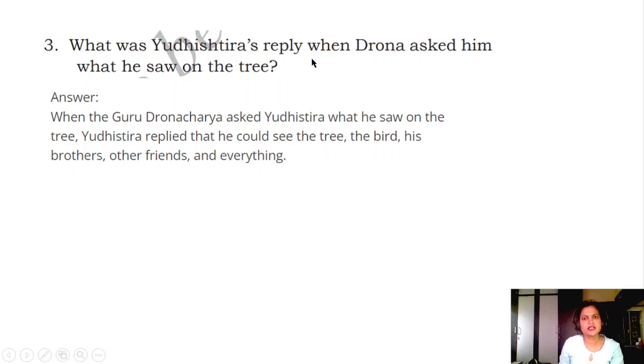Question 3: What was Yudhishthira's reply when Drona asked him what he saw on the tree? Answer: When Guru Dronacharya asked Yudhishthira what he saw on the tree, Yudhishthira replied that he could see the tree, the bird, his brothers and other friends, and everything.